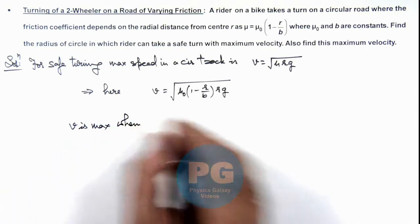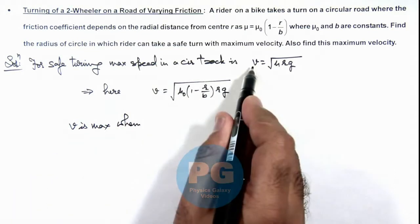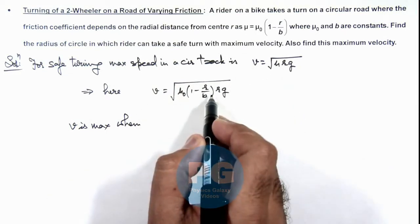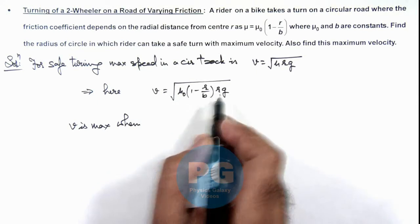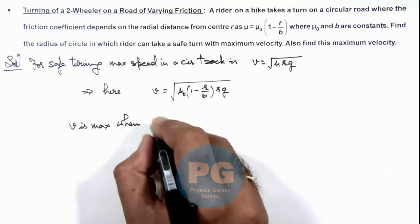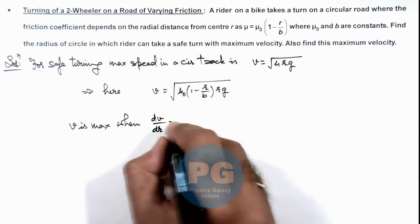Students must not confuse that if this is the maximum speed, it'll be for a particular radius. When it depends on radius, there exists one radius at which this maximum speed will be maximum. So v is maximum when dv/dr = 0.